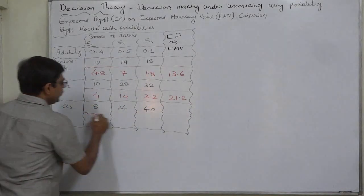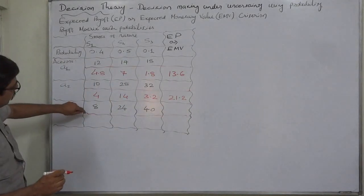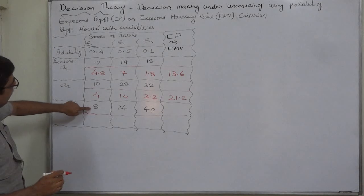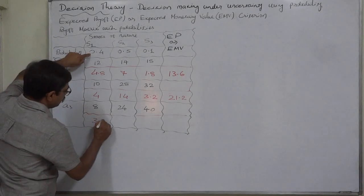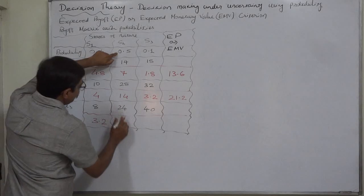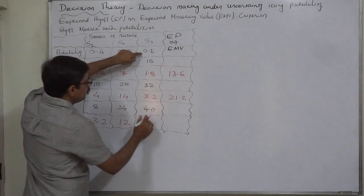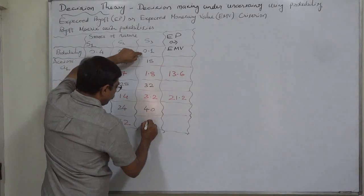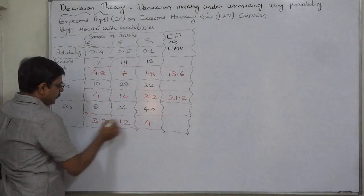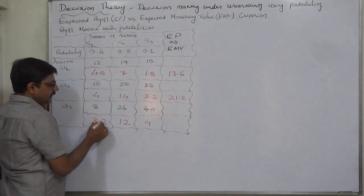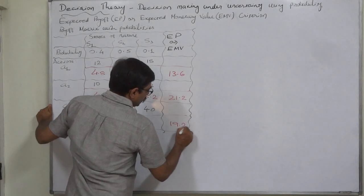For action A3: 8×0.4 = 3.2, 24×0.5 = 12, and 40×0.1 = 4. The summation is 3.2 + 12 + 4 = 19.2. So the expected payoff for A3 is 19.2.